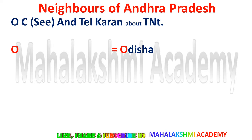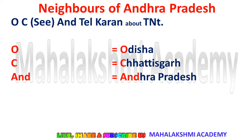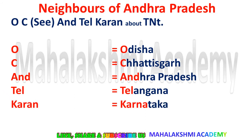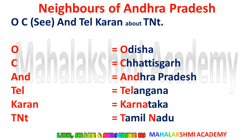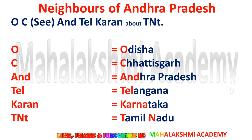Here is how it works: O is for Odisha, C is for Chhattisgarh, And is for Andhra Pradesh itself, Tel is for Telangana, Karan is for Karnataka, and TNT stands for TN — that is Tamil Nadu. This way we can learn the neighbors of Andhra Pradesh.